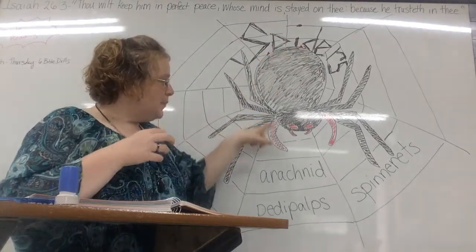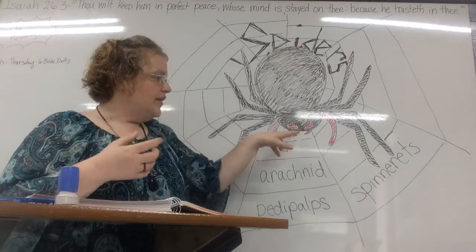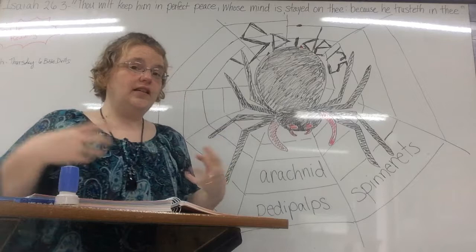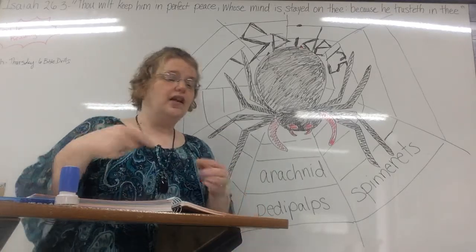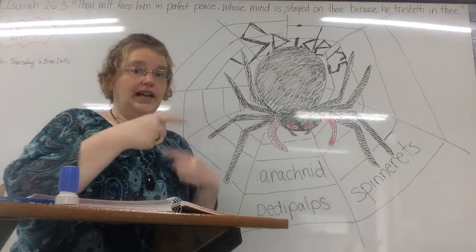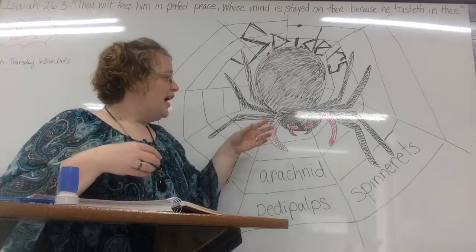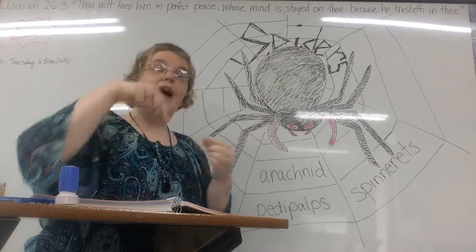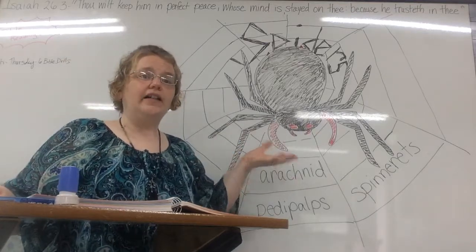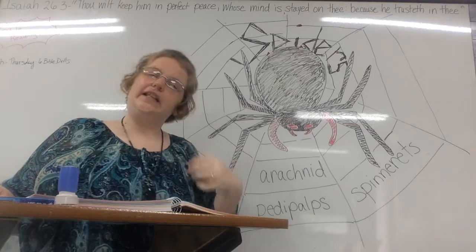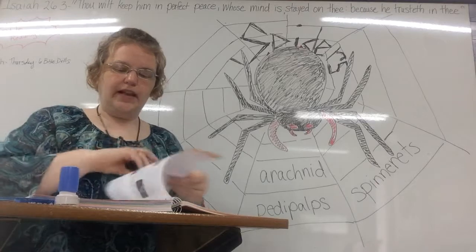When the spider feels the web moving, it crawls down and uses its pedipalps to hold the insect caught in its web. Then with its fangs it injects venom to paralyze it so it cannot move. If the spider isn't hungry at that point, it will wrap the prey in silk and save it for later. But if it is hungry now, it will not eat the animal — it will drink its blood.